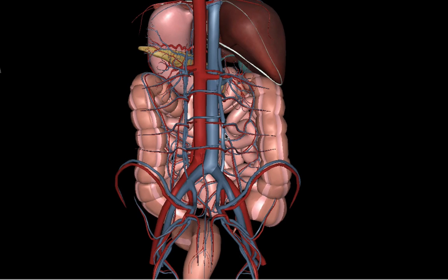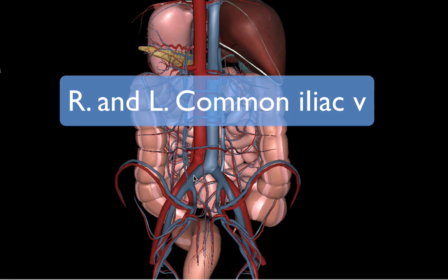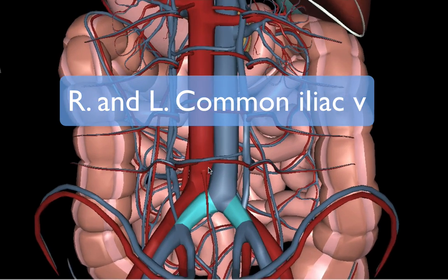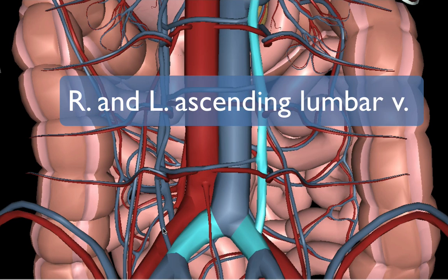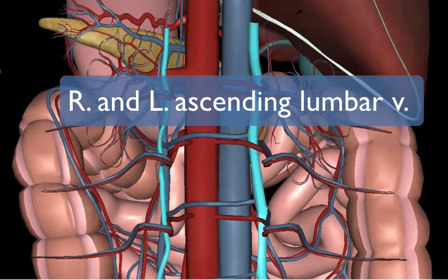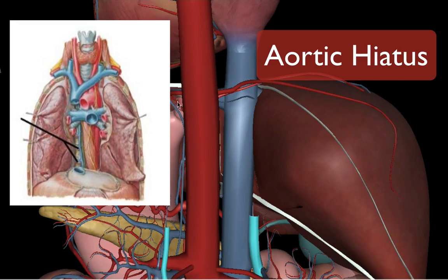We're going to start off with two veins that connect to the thoracic venous system we discussed previously. Here we have our right and left common iliac veins, and you'll see that each of these veins has two veins ascending above it — the right and left ascending lumbar veins.